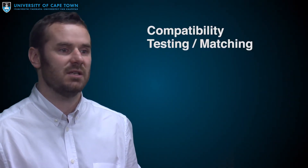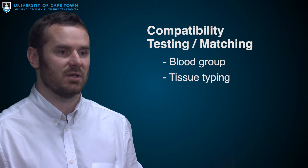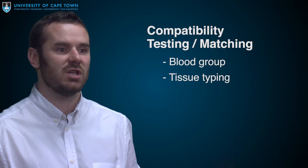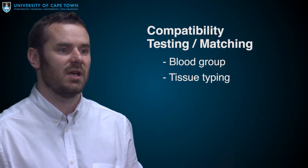The final component of the donor workup is an assessment of compatibility. Blood is taken to check the donor's blood group as well as for tissue typing. Tissue typing bloods have to be sent off to specialised laboratories and testing can take some time, typically a few hours to complete. These are usually sent to the laboratory as soon as an initial donor assessment is deemed favourable.